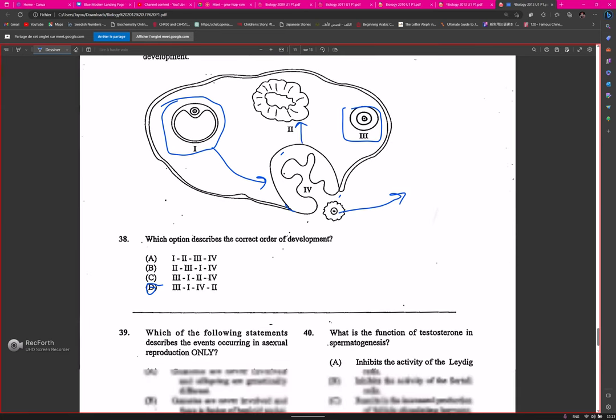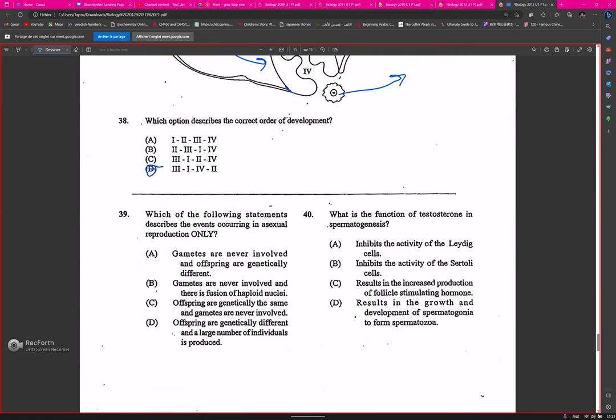Question thirty-nine: which of the following statements describes the event occurring in asexual reproduction only? Question forty: what is the function of testosterone in spermatogenesis? It results in the growth, so it's for the growth. There's a question about the growth and development of spermatogonia and spermatozoa, and the answer was testosterone. This is just that switched around.